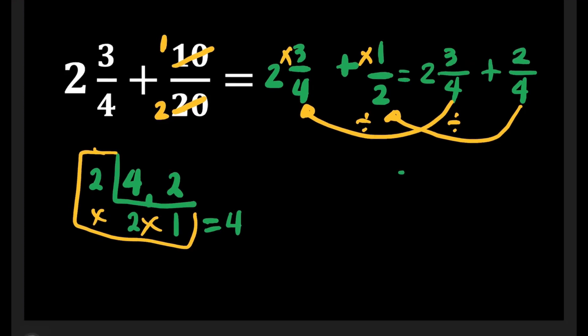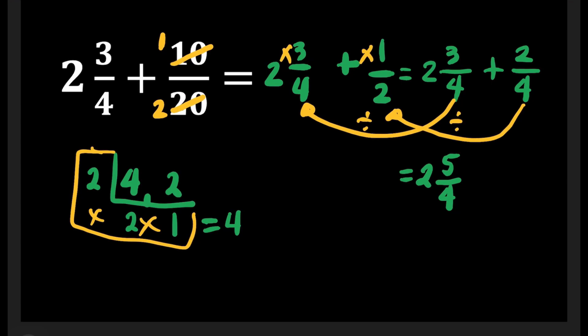Now we may copy the whole number 2 and then add our numerators. 3 plus 2 is equal to 5, then copy the denominator which is 4, giving us 2 and 5 fourths. But this is not yet the final answer because a mixed fraction should be composed of a whole number and a proper fraction. What we have here is a whole number and an improper fraction, so this is not yet the final answer.